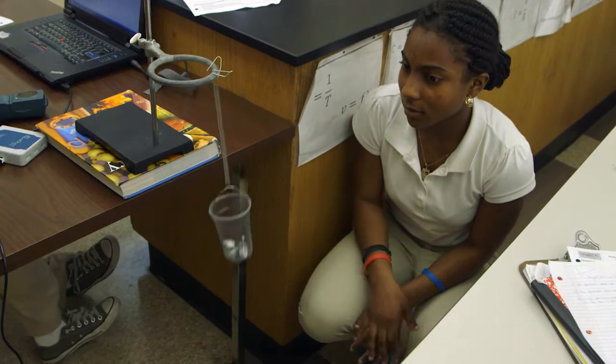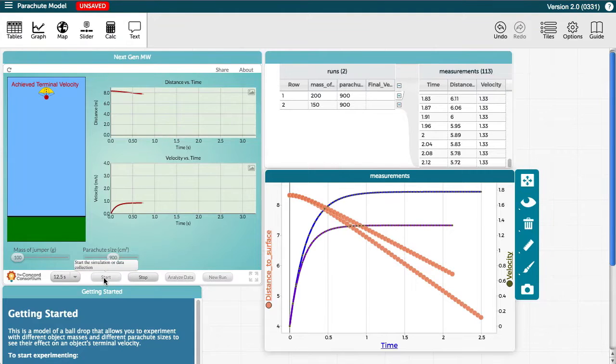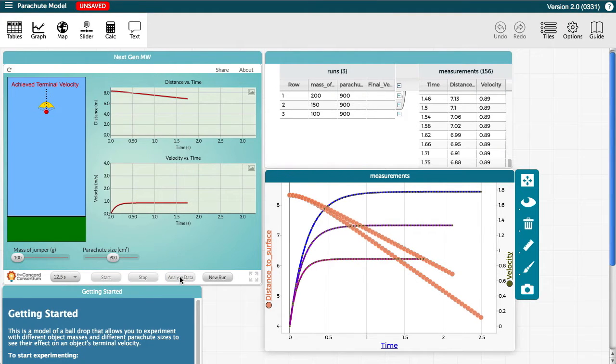Inquiry Space was another Concord Consortium project that pushed CODAP to better support data generated by simulations or from sensors in real time for hands-on experiments.